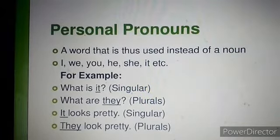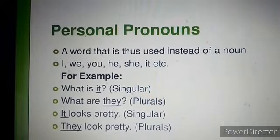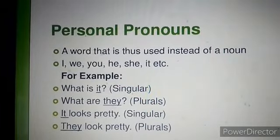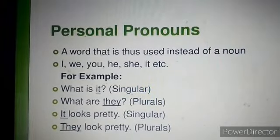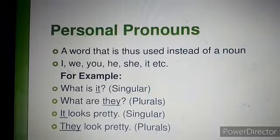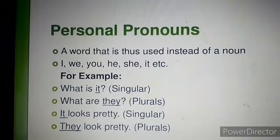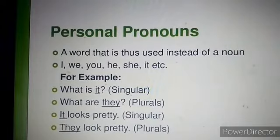The word it is a personal pronoun used for a singular noun. The word they is used for plural. Look at the example: 'It looks pretty' — here it is a singular pronoun. 'They look pretty' — here they is used for plural, referring to persons or things. These are all personal pronouns.